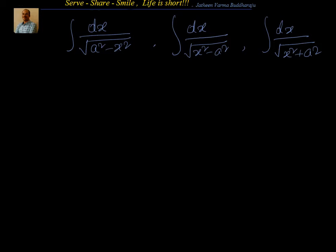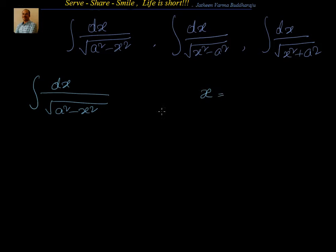The first one: we have to find out the integral of dx by root of a square minus x square. For trigonometric substitution, we have to see which value to substitute for x so that the square root can be taken off. We can take x equal to a sine theta. If I take x equal to a sine theta, I will have a square minus a square sine square theta, which is a square cos square theta. When I take the square root, it becomes a cos theta.